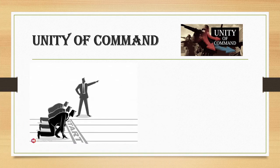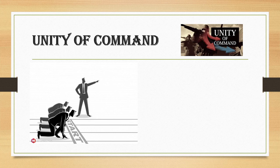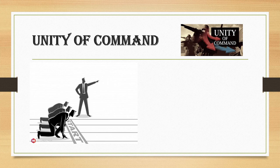If you have more than one boss giving you instructions, you won't know whose instruction to follow. As we can see in this picture, three people are ready for a race and two people give the start signal at different times — the runners won't know whose signal to follow, causing confusion. This principle — unity of command — states that an employee should have only one boss and follow his command. If an employee has to follow more than one boss, there begins a conflict of interest and it can create confusion in the organization.